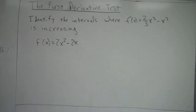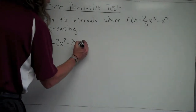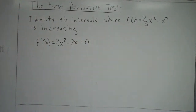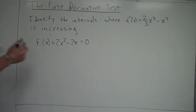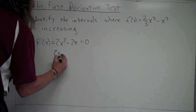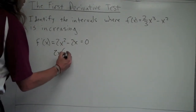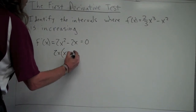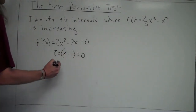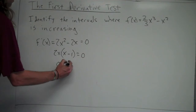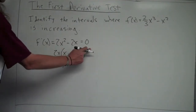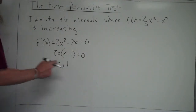Now, what I'm going to do next is set the derivative equal to zero. We're not trying to find when the derivative equals zero per se, because we want to find when f prime is positive, not when f prime is zero. But this is going to help us get there. So I'm going to factor out two x, leaving me with x minus one equals zero. So I end up getting x equals zero and x equals one — that's where f prime is equal to zero.